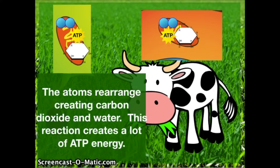Glucose and oxygen mix together inside the mitochondria of the cell and a chemical change occurs. The atoms rearrange, creating carbon dioxide and water. This reaction creates a lot of ATP energy.